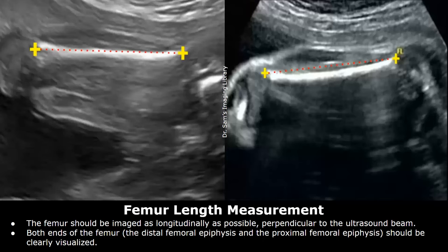After the femur is located, it should be imaged as longitudinally as possible. Its full length should be seen, and it should be perpendicular to the ultrasound beam. Try to obtain a right angle between the ultrasound beam and the femur.